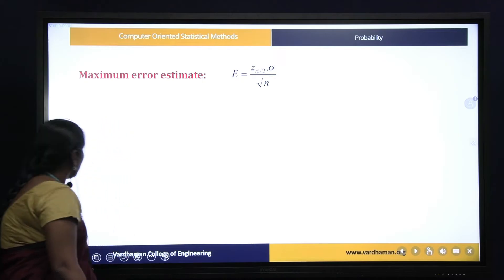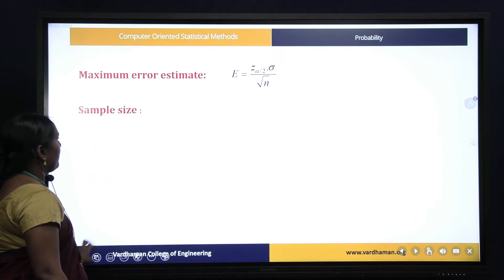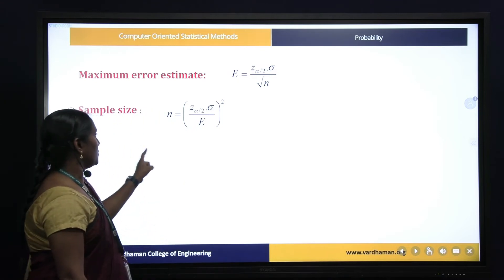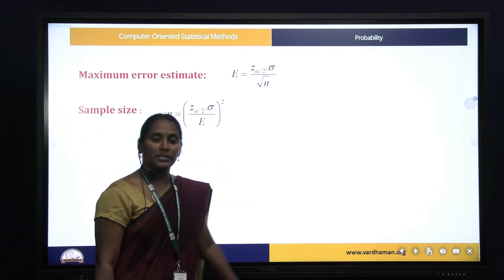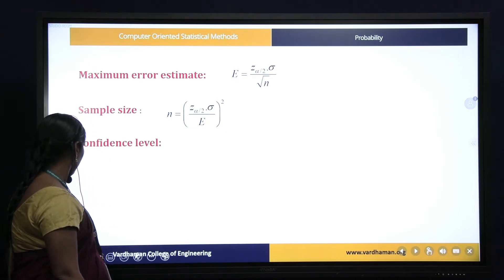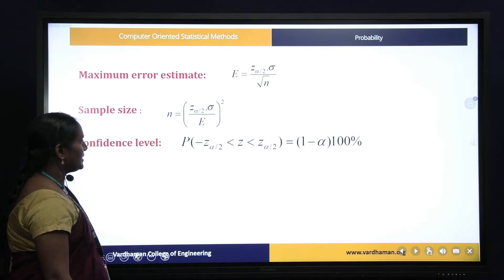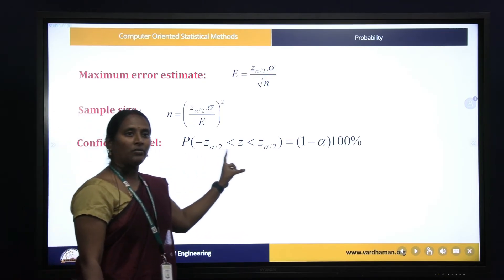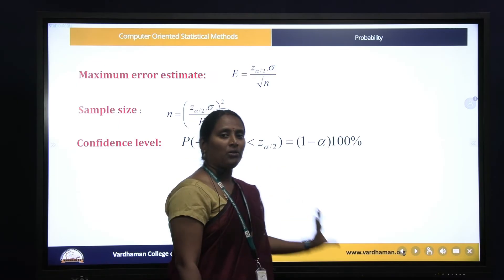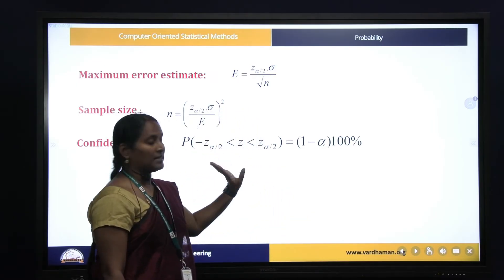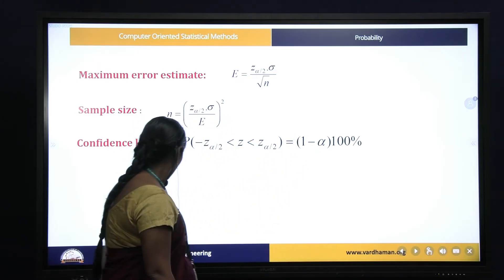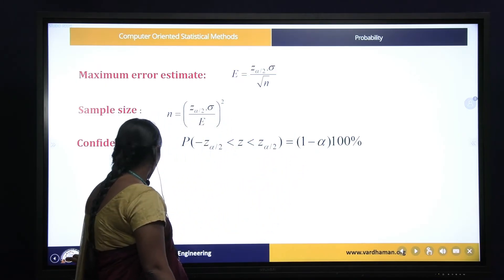The next formula is for sample size, denoted by n: n = (z_alpha/2 * sigma / E)^2. For confidence limits, based on the normal distribution, P(-z_alpha/2 < Z < z_alpha/2) defines the (1 - alpha) * 100% confidence interval.